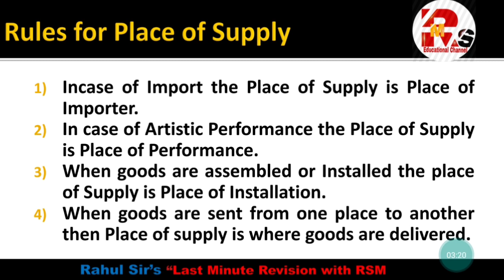Number 3: When goods are assembled or installed, the place of supply is the place of installation. Number 4: When goods are sent from one place to another, the place of supply is where the goods are delivered — the delivery point becomes the place of supply.